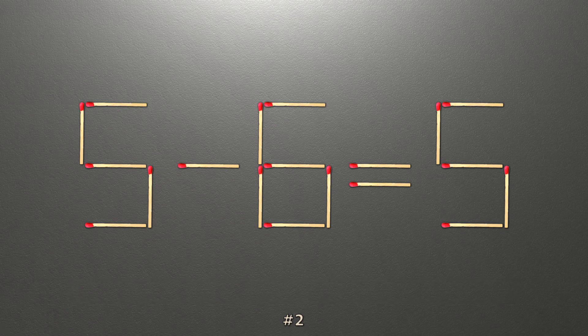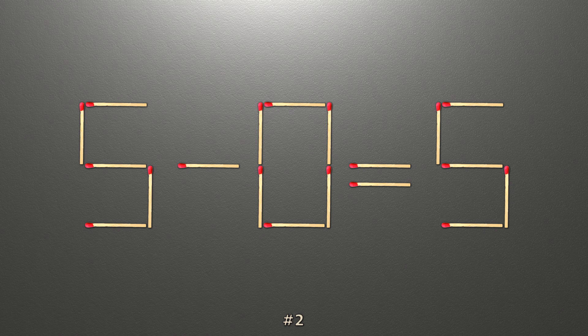To do this, all we need to do is move this match right here. Now when we check the condition, 5 minus 0 is 5, and 5 equals 5. Now our equality is correct.